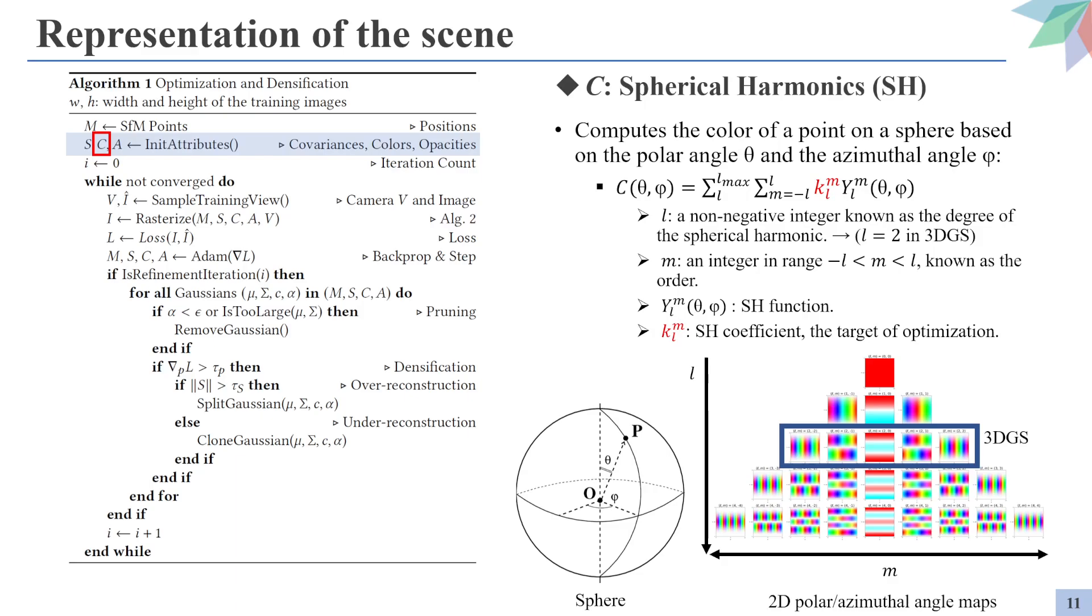Now we need to define the colors of the Gaussians. But one thing to note is that the color attribute should be dependent on the viewing angle, as many real-world objects exhibit different colors from the front, side, and rear views. To implement this, the authors decided to adopt spherical harmonics, which is a function that returns the color of the point on the surface of a sphere based on the given polar angle theta and the azimuthal angle psi. The function is very complex, so we will only take a high-level overview. The color of the given point is the weighted sum of the spherical harmonic functions multiplied by the corresponding spherical harmonic coefficient k. These k's are the targets of optimization.